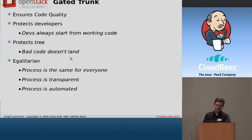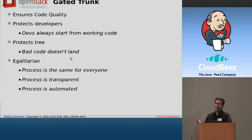The gated trunk has proved very popular with the core developers of the project. In a sense, it protects them and it protects their time. As a developer, when you're going to start working on a change, you check out the tree and you know that the tree is working because no changes can actually land in the tree that break it. So that's a great place to start from — not having to start your day fixing somebody else's bug.